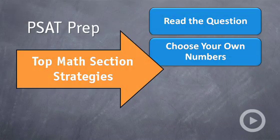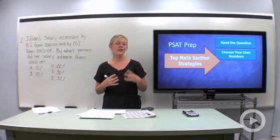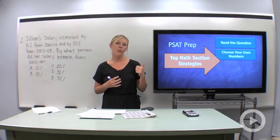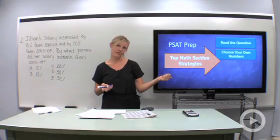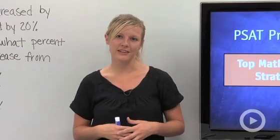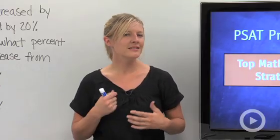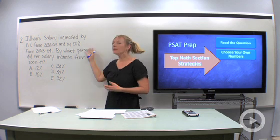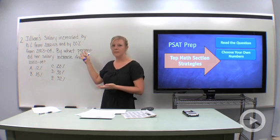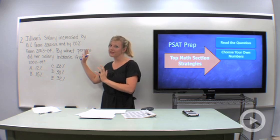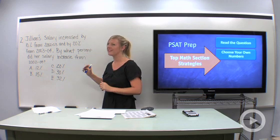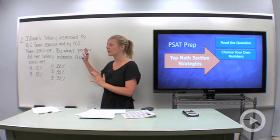On the math section of the PSAT, another strategy that you can use is choosing your own numbers. Now, you can use this in two instances. One, you can use it when you're solving really complicated formulas and you're having to put a lot of steps together. It's actually faster to choose your own numbers. Also, it's really effective when you're solving percent problems. Let's take a look at what I mean.